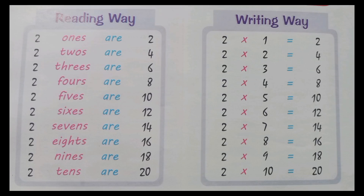Table of two. Two, one's a two. Two, two's a four. Two, three's a six. Two, four's a eight. Two, five's a ten.